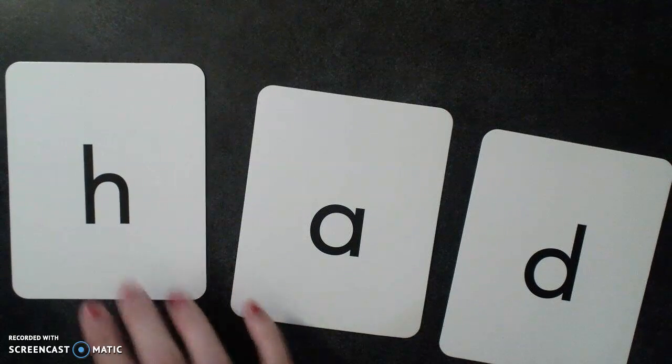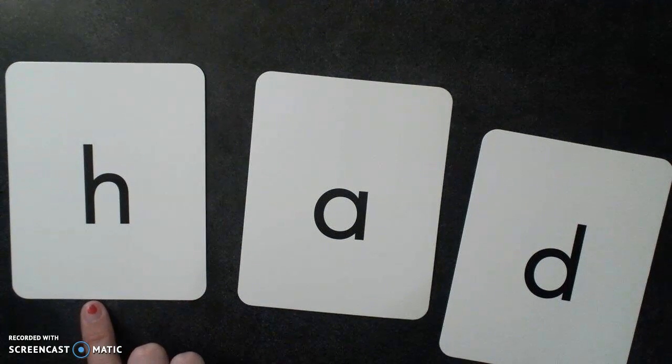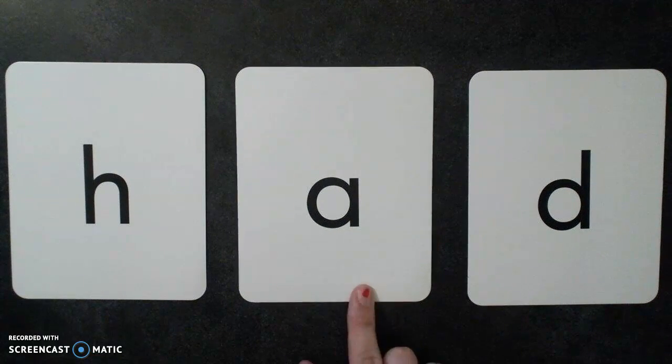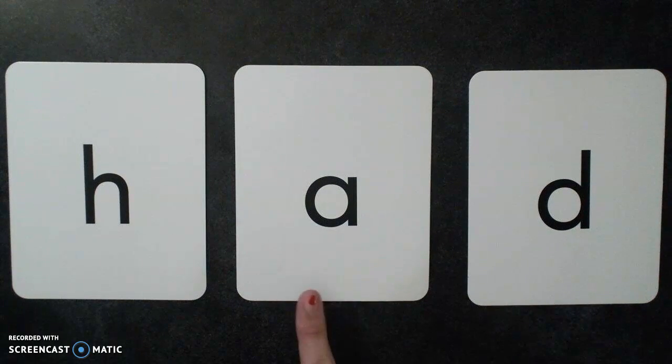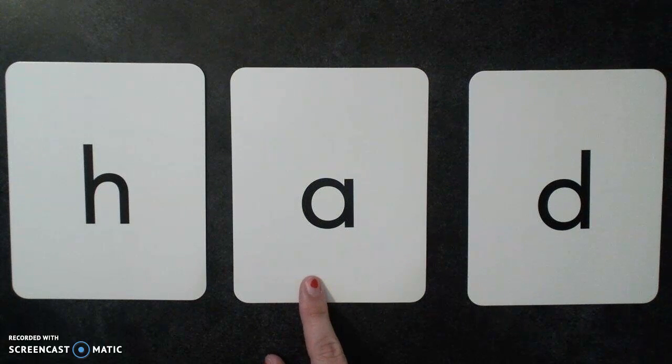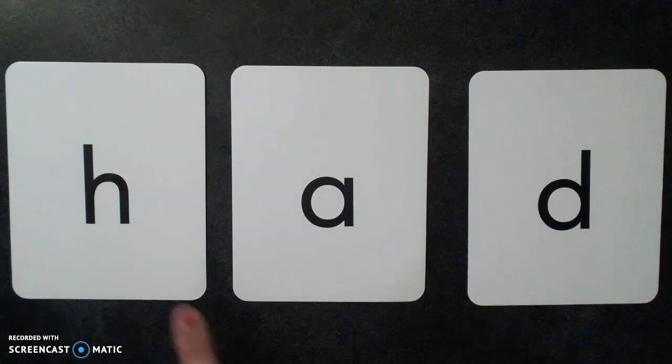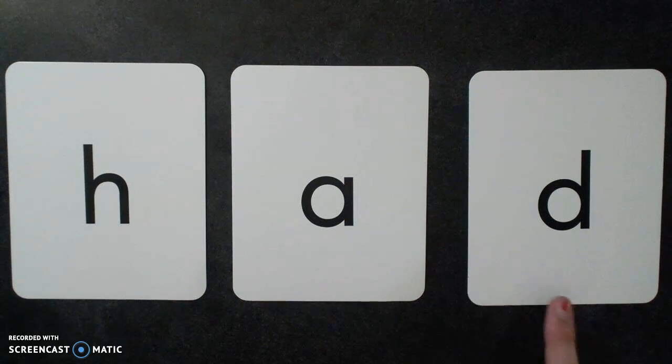Alright, so we have an H that makes the H sound. Our A, since it's the only vowel and it's followed by a consonant, it makes the short AH sound. And then the D makes the D sound. So we have H, AH, D.